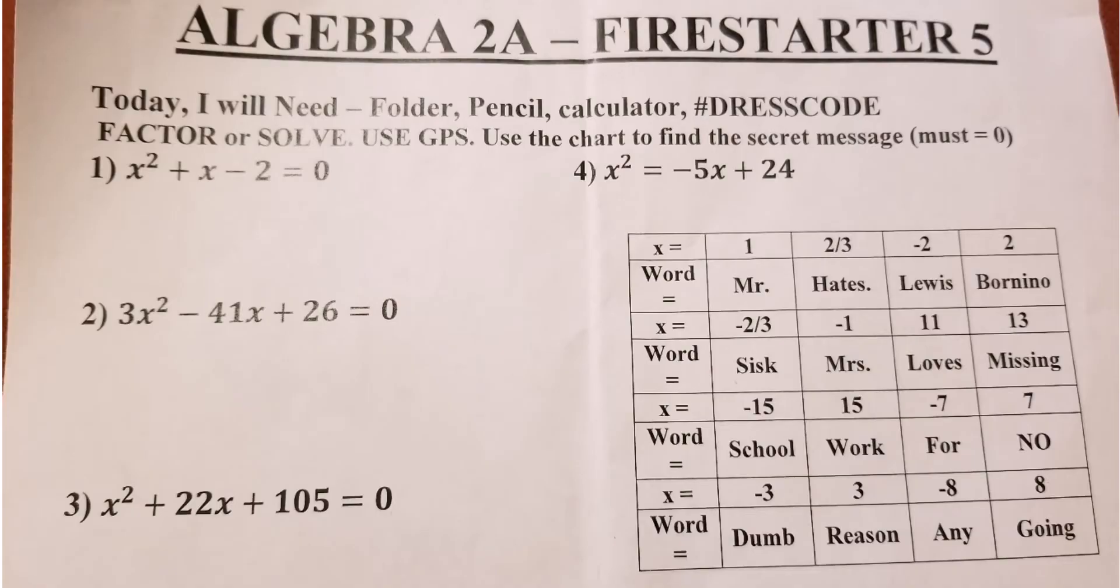All right, so this is what our Firestarter looks like. It's got four equations. The box here, like I said, there's 16 words there. Only 8 of them, I mean there's a bunch of stuff that could be. I kind of made some of those words very similar. Now we're just going to solve those like we would using the GPS, and then we're going to have our answers.